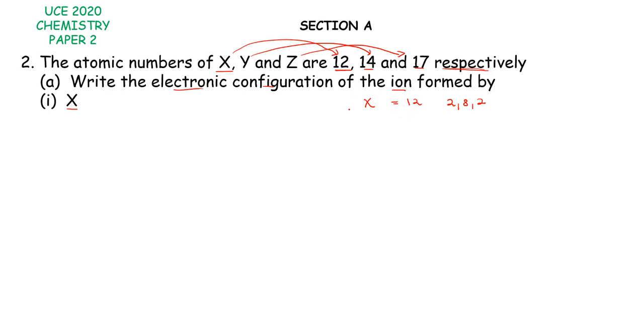However, for this one to become an ion, it will lose the last two electrons. That means the electronic configuration will become 2, 8. So the answer is 2, 8 or we can say 2 comma 8 or 2 to 8 depending on which one your teacher might prefer.